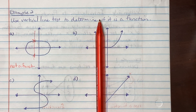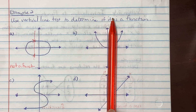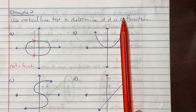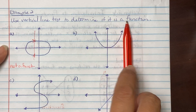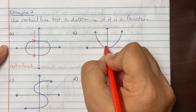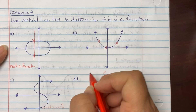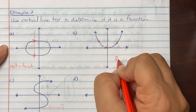When you look at b, when I roll it left to right, it hits at one place each time, which means there's only one x value. So it is a function.